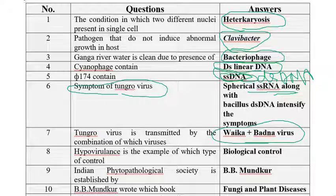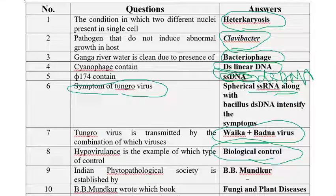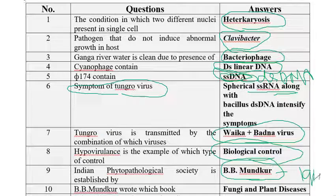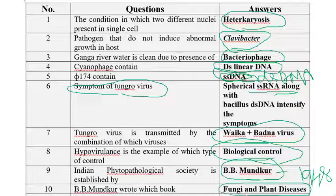Hypovirulence is an example of biological control. The Indian Phytopathological Society was established by B.B. Mundkur, who wrote a book called Fungi and Plant Diseases in 1948.